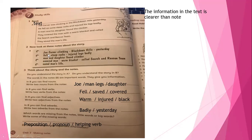Here we will find two nouns. For example, we have Joe as a noun, man as a noun, legs and daughter. Here, find two verbs like fell, saved, covered. And two adjectives like warm, injured, and black. And here, find two adverbs like badly and yesterday.